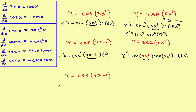Let's try this one. Y prime equals the derivative of the cosecant, which is negative cosecant — with parentheses here — times the cotangent, with parentheses here. Rewrite the original inner part twice: you write it here and you write it here. Then times the derivative of what's on the inside — the derivative of 6x minus 2 is 6 — and you are done. So there's a sample of one of each kind.